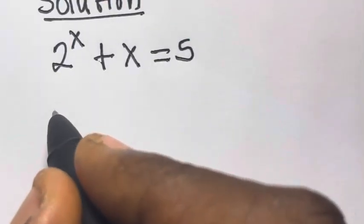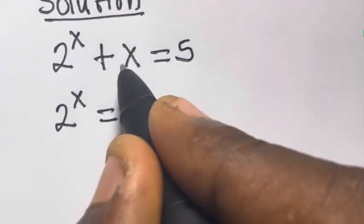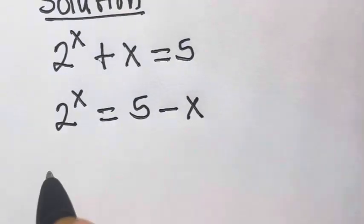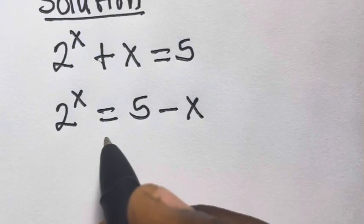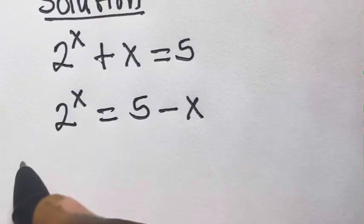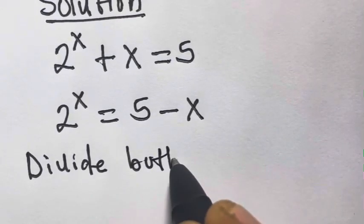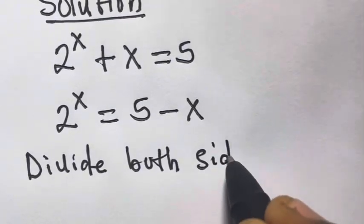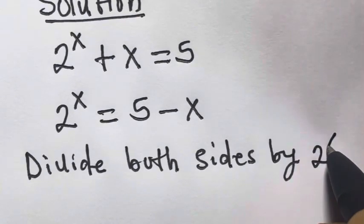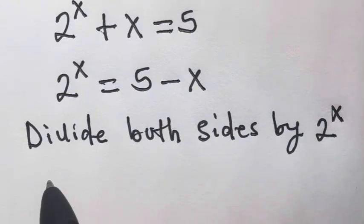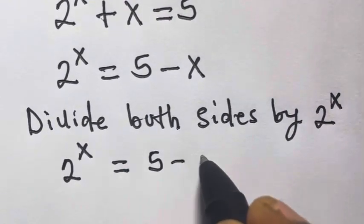From here we can write this as 2 raised to power x equals 5 minus x, because if we transfer plus x to the other side it becomes minus x. So from here we can divide both sides by 2 raised to power x, and if we do that we are going to have 2 raised to power x equals 5 minus x.